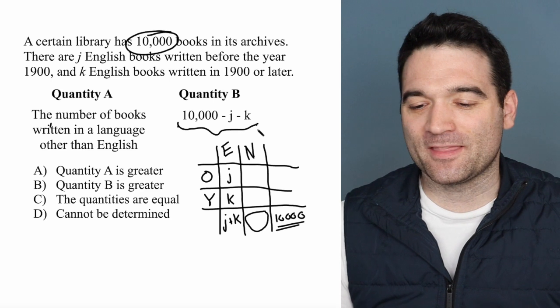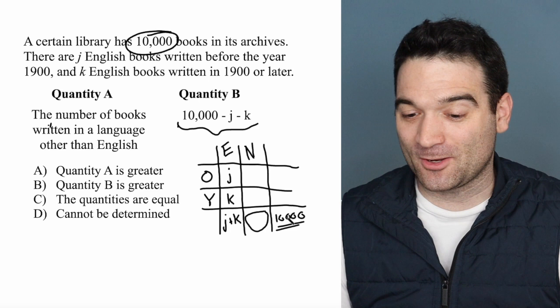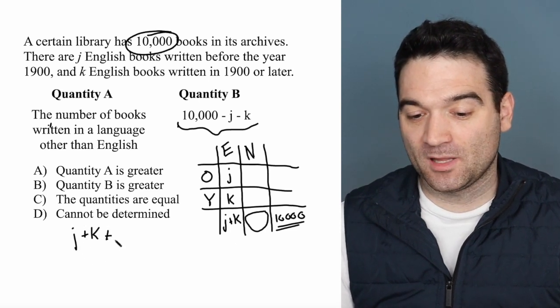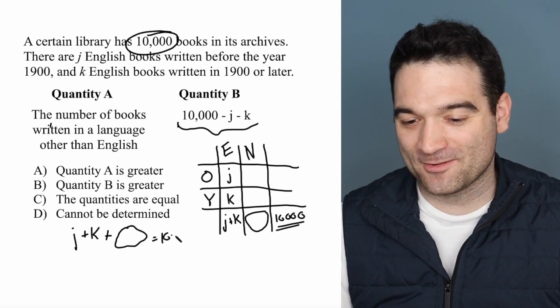Well, let's look at this: 10,000 minus J minus K. And I could actually, if I wanted to set this up as an equation, I could say J plus K plus this number right here, I'll keep that as like a blob, is equal to 10,000.